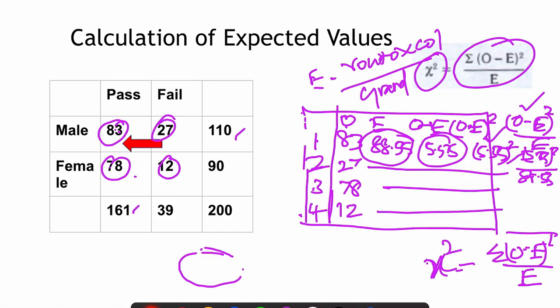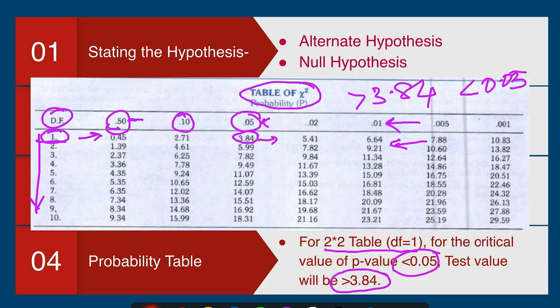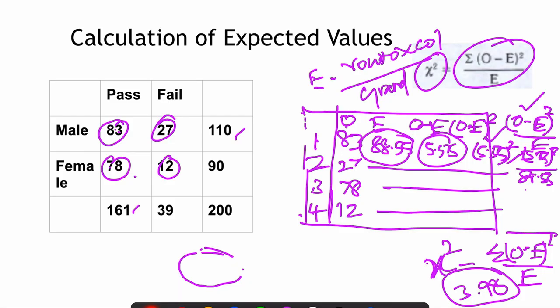Going back to the original calculation, the chi-square value is 3.98. Since 3.98 is greater than 3.84, the interpretation is that there is a significant association between gender and exam results. If you want to go one step further, look at the percentages — the pass percentage among females is significantly higher when compared to males.